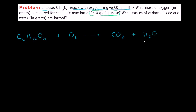The first thing you should always do is make sure your equation is balanced. You always want to do the most complicated molecules first and the simplest molecules last, because those are the easiest to balance. On the left-hand side I have six carbons, but on the right-hand side I only have one carbon in CO2, so I multiply that by six. Now I have six carbons on both sides.